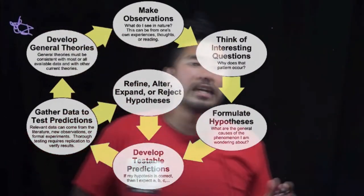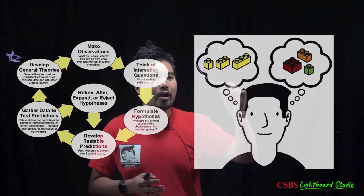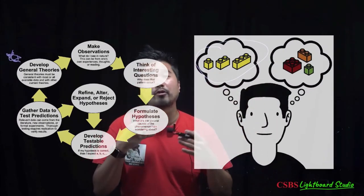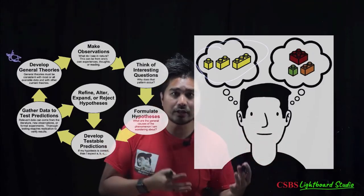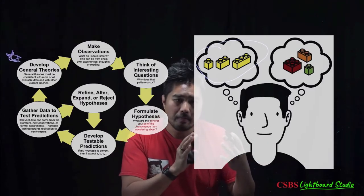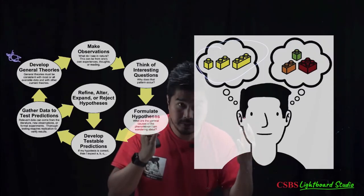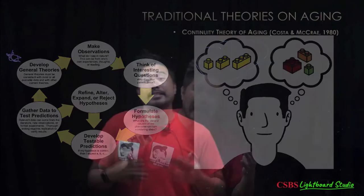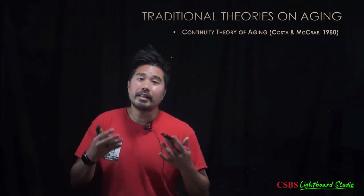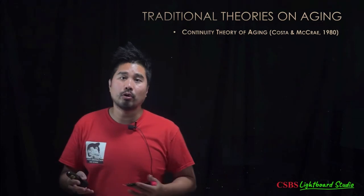Why do we need these theories? Why does science start from theories? There's so much evidence going on in the world, so many research findings. A theory is like a housing — it houses all of this knowledge into one package. These theories have certain assumptions, and those assumptions are how we generate questions that are interesting and testable. Testableness is the backbone of whether they go forward through the scientific process or get refined.